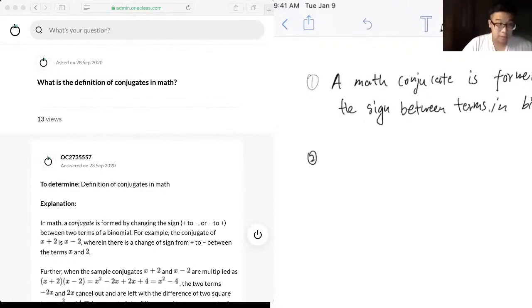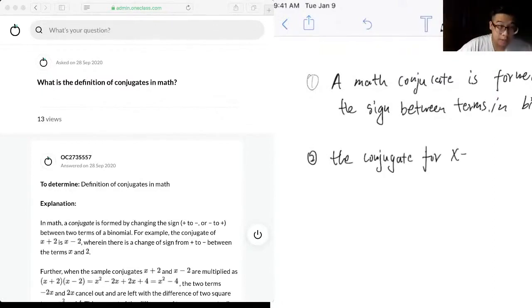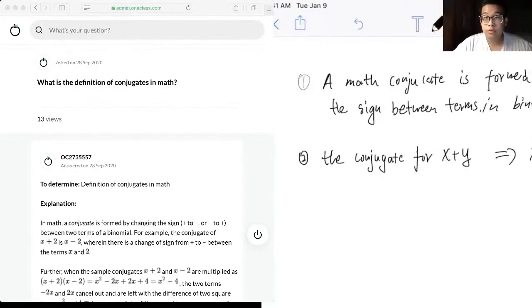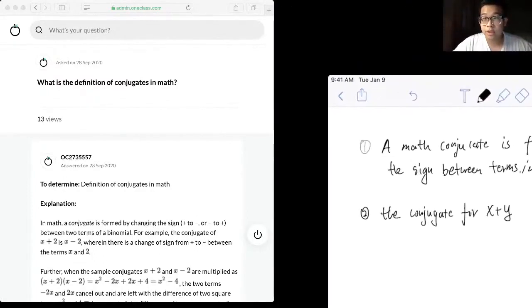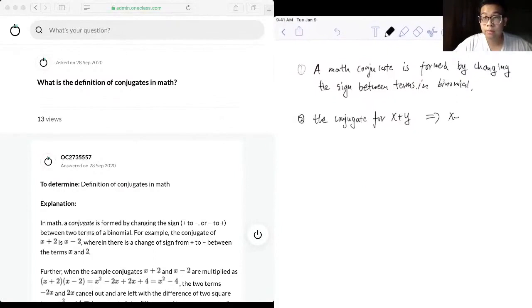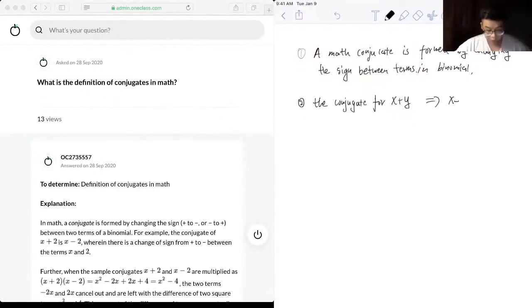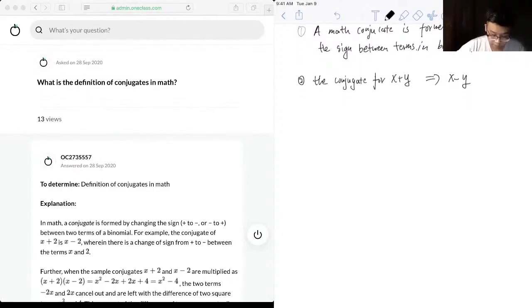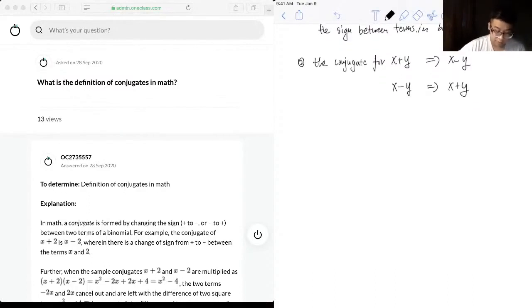So coming up will be an example. So I would say the conjugate for x plus y will be x minus y. And so same thing. So the conjugate for x minus y will be x plus y. So as you can see from the example, we just simply change the plus sign to minus sign.